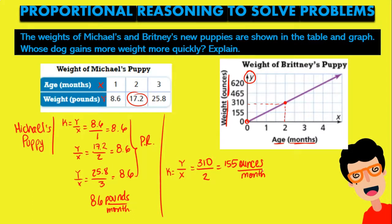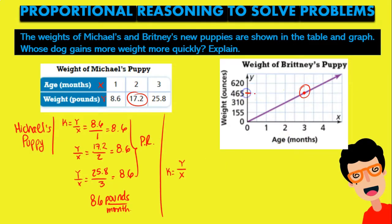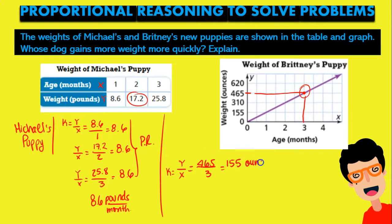Let's say you don't want to use that point and maybe you want to use another one. If you use this other point, you're going to see it has a y value of 465 and an x value of 3 months. So when we divide 465 by 3, that is also going to give us 155 ounces per month. It doesn't matter which point you use from the graph because it is a proportional relationship — the value of k is going to be the same. Now we have to compare ounces and pounds.